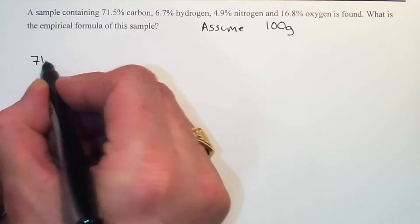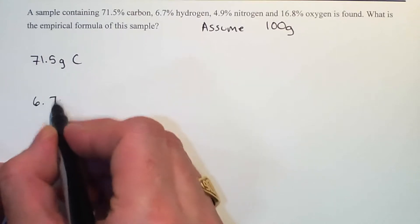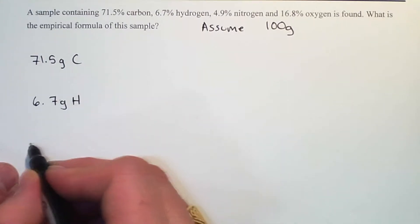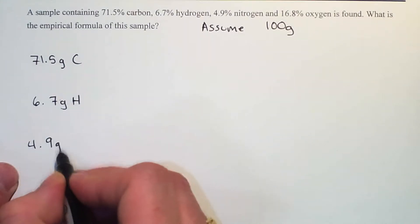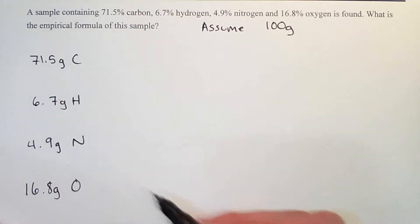So 71.5% becomes 71.5 grams, 6.7 grams of hydrogen, 4.9 grams of nitrogen, and 16.8 grams of oxygen.